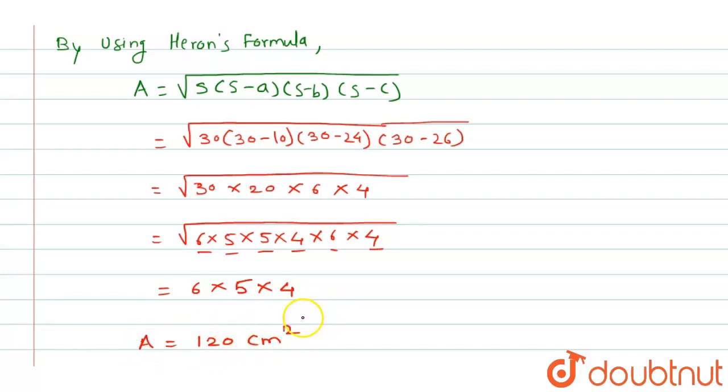So this is the area of the triangle when the sides are 10, 24, and 26 centimeters. Hope this example helps you understand. Thank you.